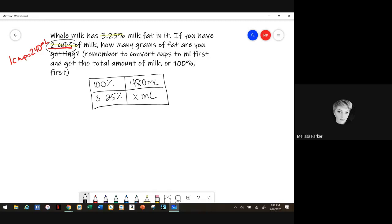All right, so now we're going to cross multiply this way. So 480 times 3.25 is 1560, and then if you multiply this way, cross multiply, you have 100x, and then you divide each side by 100. So then you have 15.6 grams is your answer.